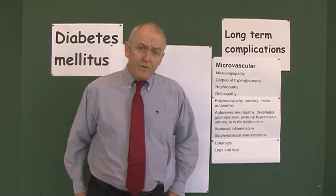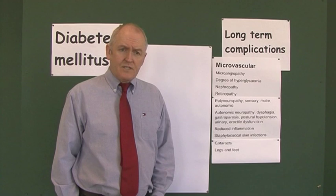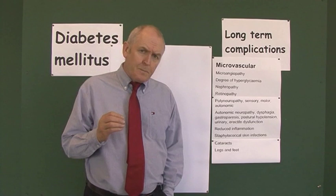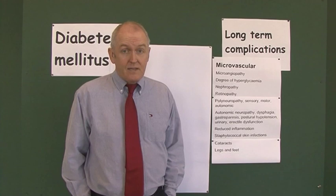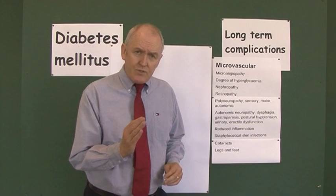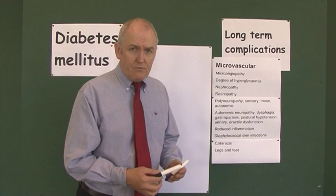Now another group of complications in diabetes mellitus are the microvascular complications. There can be microangiopathy, disease of the small blood vessels. And here we're talking about the level of the arterioles, the venules and primarily the capillaries. So we're talking about microvascular disease on a microscopic level. And let's think about what happens by first of all reviewing a normal capillary.